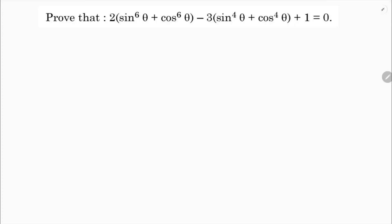Prove that 2 into sin power 6 theta plus cos power 6 theta minus 3 into sin power 4 theta plus cos power 4 theta plus 1 equals 0.